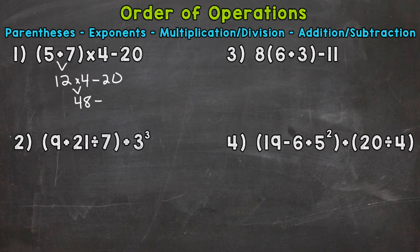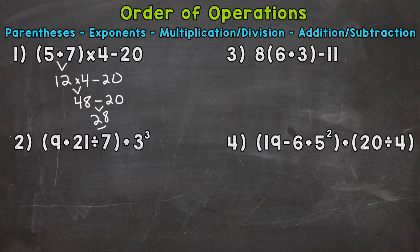Bring down our subtraction sign and 20 — everything we did not use. We're left with only subtraction, so that's where we end. 48 minus 20 is going to give us 28. And that's our final answer.